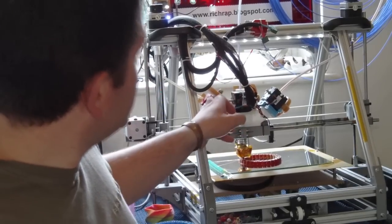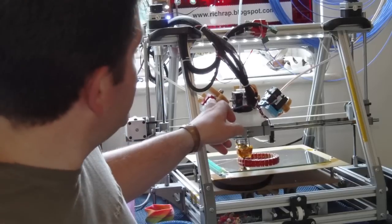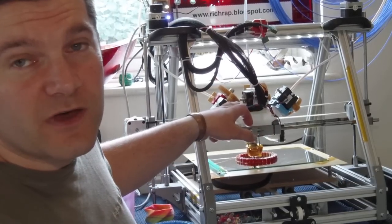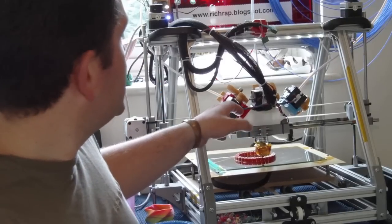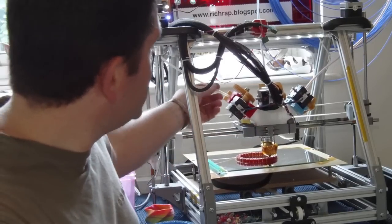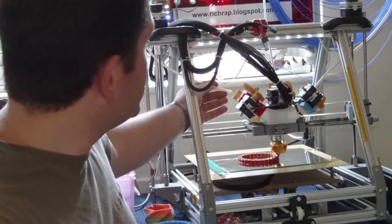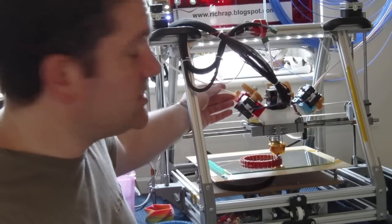In this particular one I've got it set up so we've got yellow, blue and red 1.75mm filaments from Faberdashery. These tubes here are just to stop the filaments from getting tangled up. It's not a Bowden setup, it's a direct drive setup.